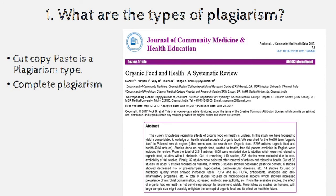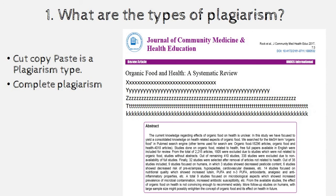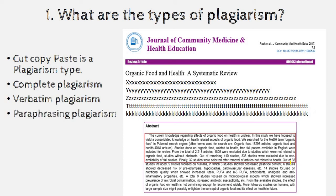Complete plagiarism is when you take somebody's article and replace their name with your name, your institution, and your details, then submit it to another journal. Verbatim plagiarism is when you take a segment from an article and mix it in. There are various types of plagiarism, but the basis is the same: you take somebody's content and don't cite it.